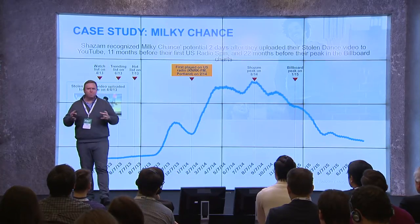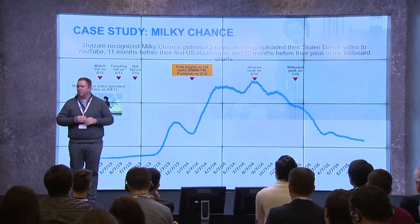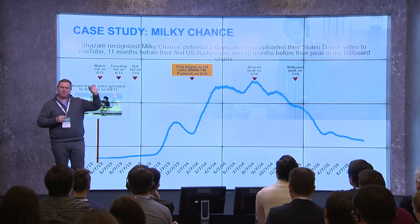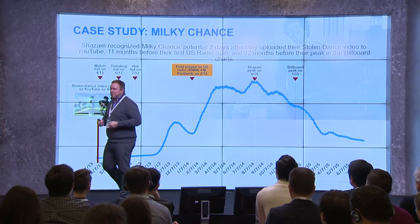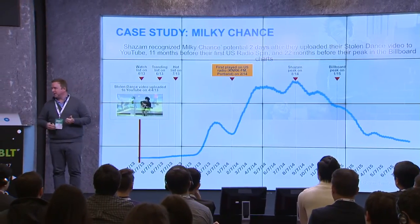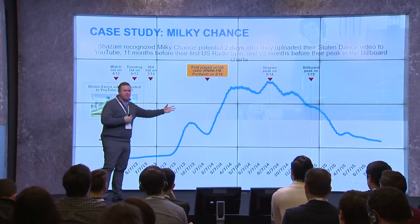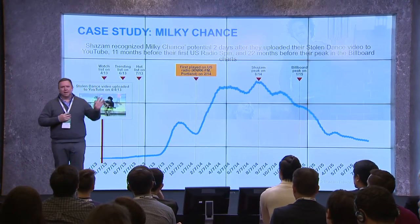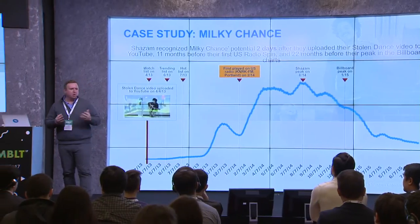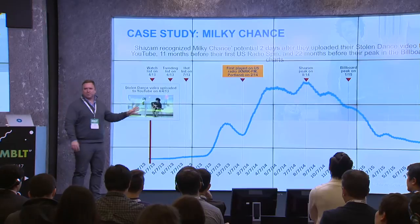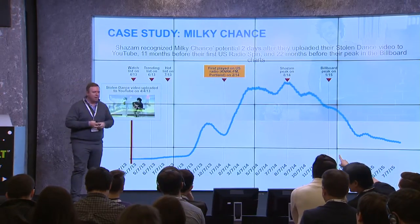Fast forward about four months — they entered our hot list and the top 20 of the German chart. Once they hit the top 20 German chart, they got signed by a label, and then started to get played in lots of other countries across Europe. This shows the evolution over almost a two-year period of when Milky Chance was discovered. It was almost a 22-month window from that first Shazam on YouTube to having their peak on the Billboard charts. From a label perspective, this not only gives them a great way to understand where to market their artists, but also whether to sign an undiscovered artist — and in Milky Chance's case, the answer was absolutely yes.